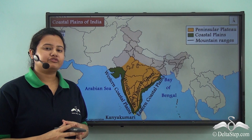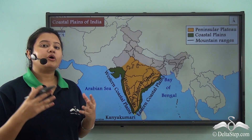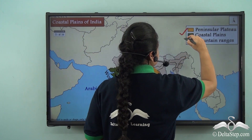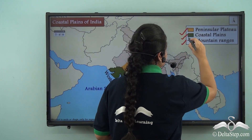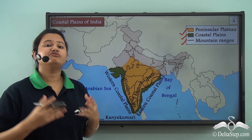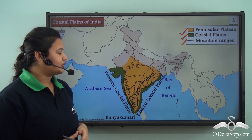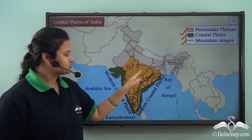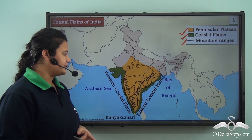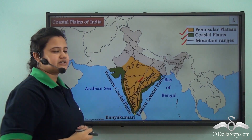This map shows some of the major physiographic divisions of peninsular India, like the peninsular plateau, coastal plains, and the mountain ranges of southern India. In our previous two lessons we have vividly talked about the peninsular plateau. This plateau forms the central and southern part of India and the region is bounded by the Western Ghats on its western sides and the Eastern Ghats on its eastern sides.